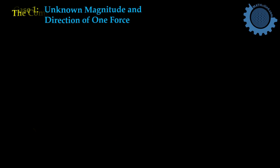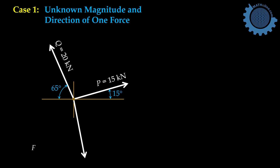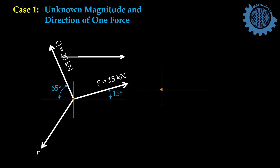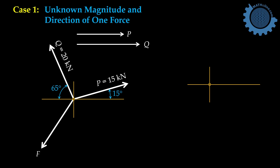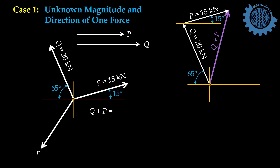Let us go to case number one. In this situation, one force is unknown — both its magnitude and its direction. To solve for F, let us have forces P and Q in scale. Let us connect Q and P. This is the sum Q plus P graphically.